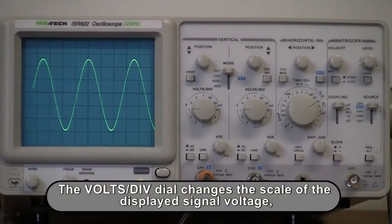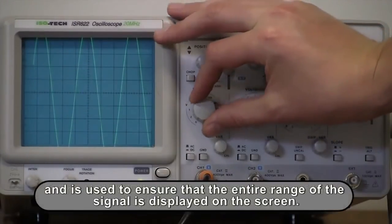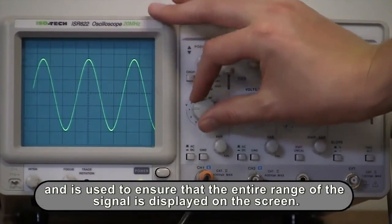The volts per division dial changes the scale of the displayed signal voltage, and can be used to ensure that the entire range of the signal is displayed on the screen.